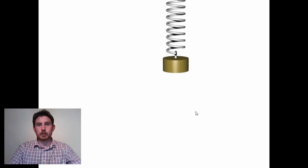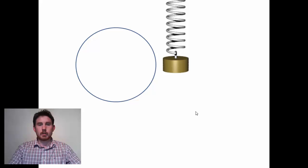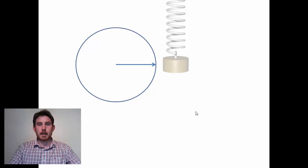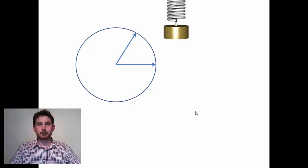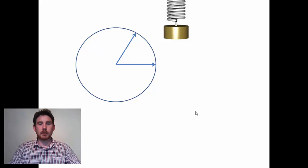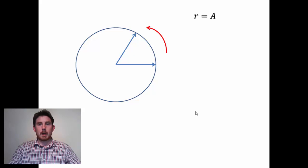We're going to start by considering a mass on a spring, which can be represented by a phasor diagram shown here as a circle. If it starts at equilibrium, the initial vector representing its displacement would point towards the right hand side. Some time later the mass has moved upwards, so its displacement is represented on the phasor like so — the direction on a phasor diagram is anti-clockwise. The radius is equal to the amplitude, the maximum displacement of the object, and we label the radius of the phasor with A for amplitude.